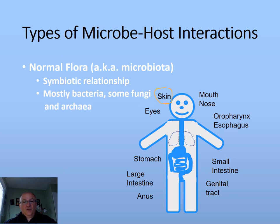Together, they're going to form what we call a normal flora. This is the population of microorganisms that exist on our body that has a symbiotic relationship with us. That means we're both going to benefit from our presence with each other. These microorganisms are going to provide us with nutrients that we don't otherwise have, some important vitamins, and they're also going to help our bodies, especially our intestines, to develop normally.